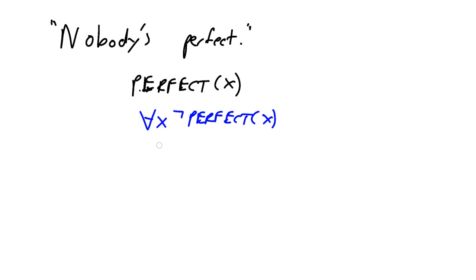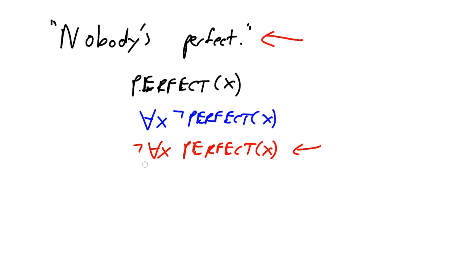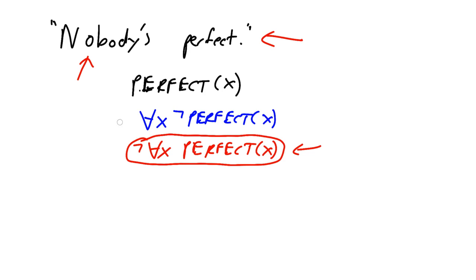Now let me give an example of a wrong answer. A lot of students would write down something like "not for all X, perfect(X)." This is absolutely the wrong answer. It's true, but it's not nearly strong enough—it doesn't match the English sentence. This is saying it's not the case that all people are perfect. Think it through: this says it's not true that everybody's perfect. But up here I'm saying something much stronger—there isn't a single case of someone who's perfect. Not only is it not true that everybody's perfect, it's not true that any single person is perfect. Therefore, that is an invalid expression.